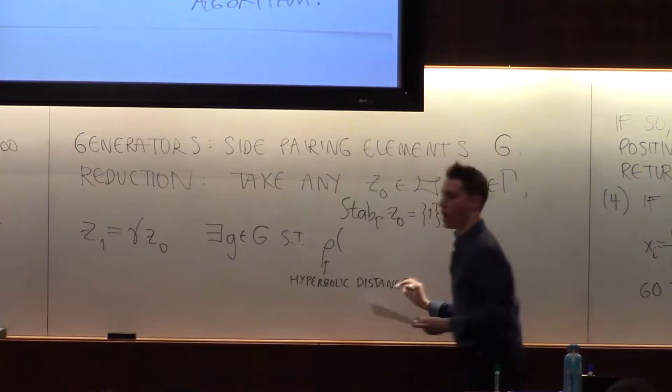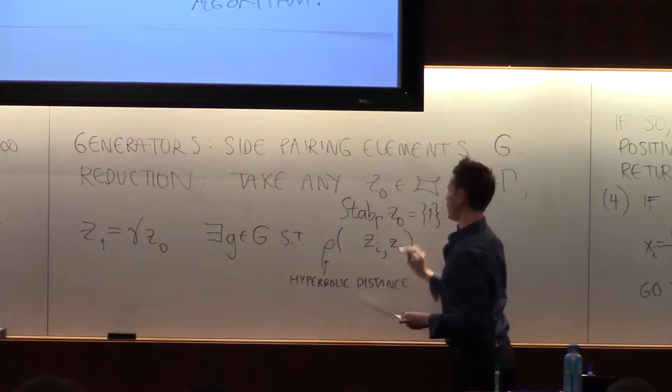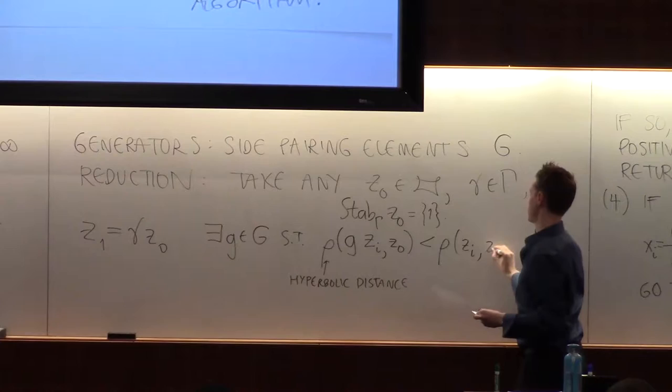It's given by the minimum of the integral of all the paths between the two points of hyperbolic metric. So you took your point zi along the way, remember it's iterative, and you measure the distance from z0, and I assert that there's one when I apply g, I'm closer.